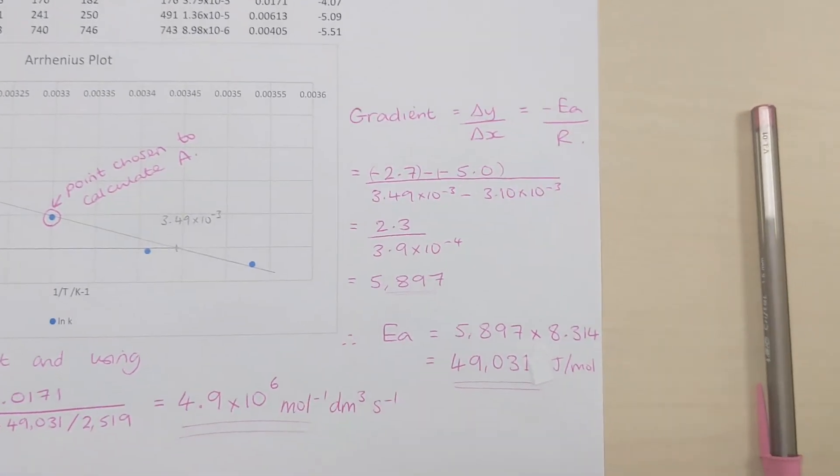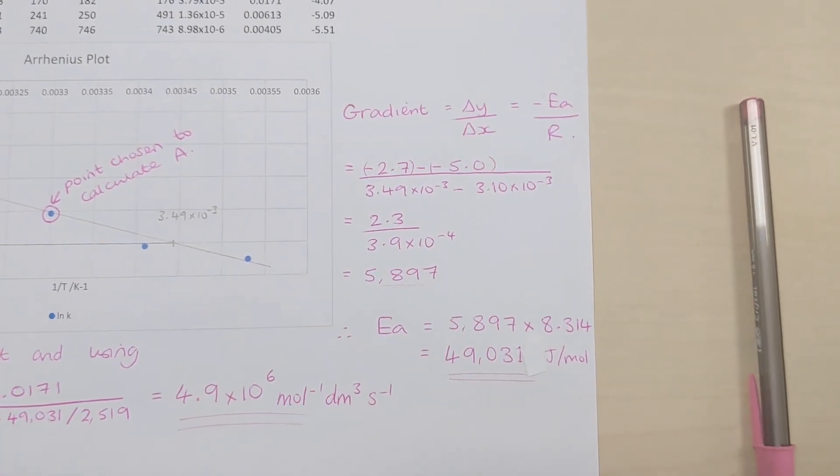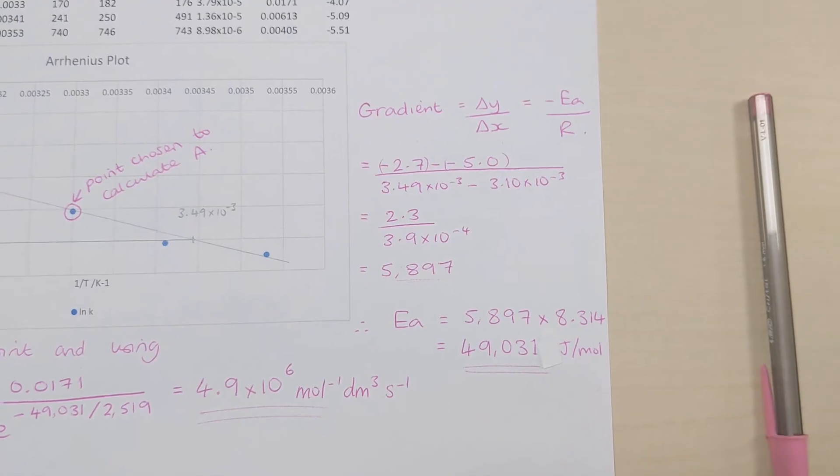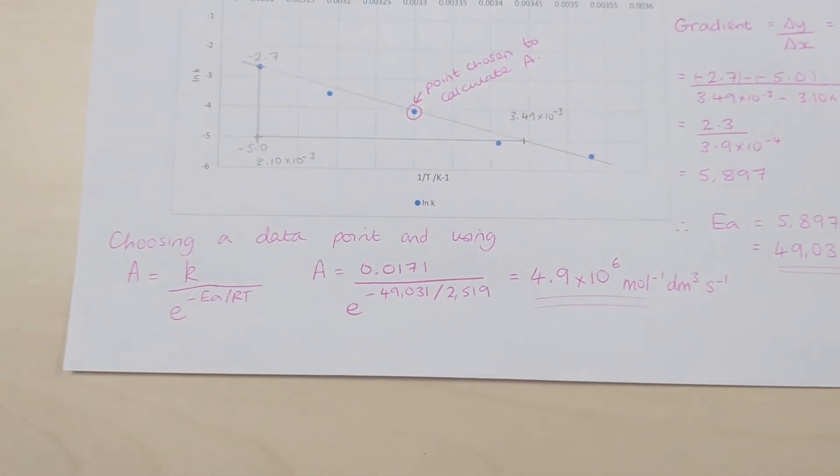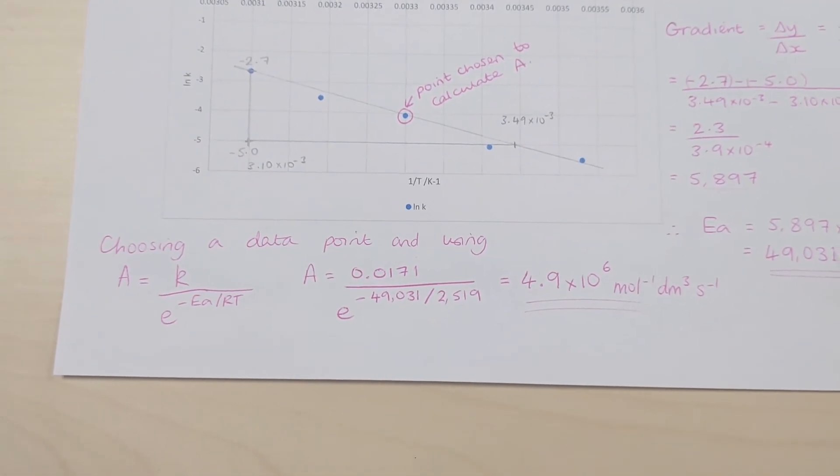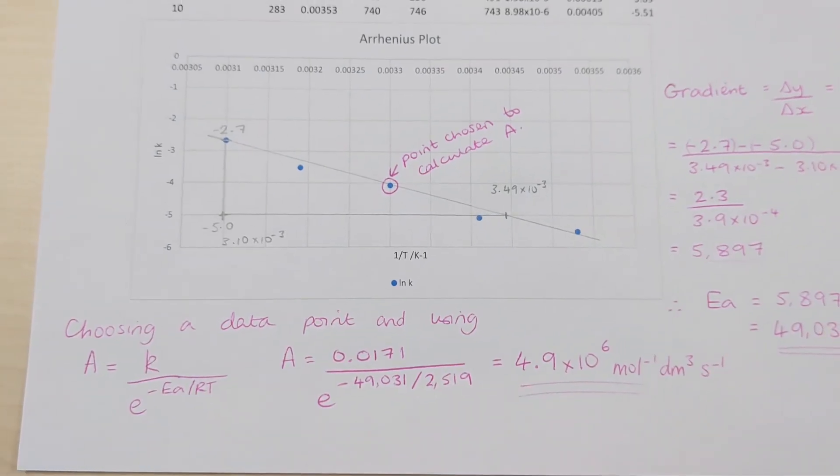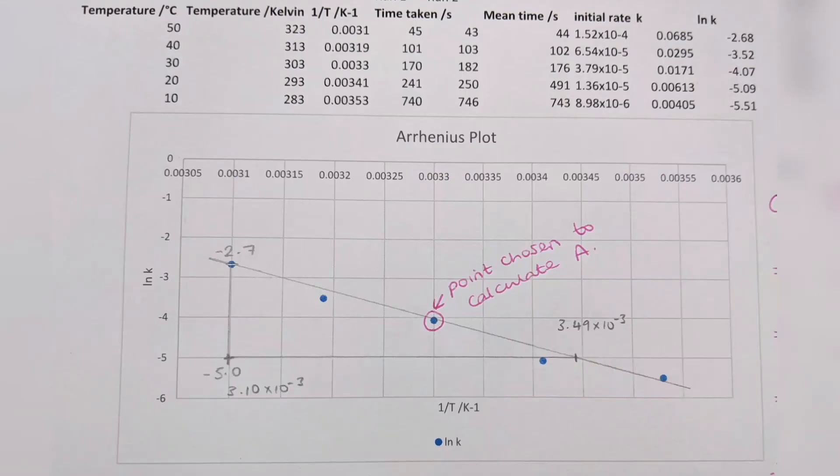And to get the activation energy Ea from the gradient we simply times by the gas constant R which is 8.314, and lastly to get the frequency factor A we use this rearranged form of the Arrhenius equation, choose a point on the graph and plug in our values.